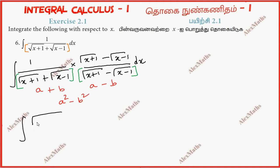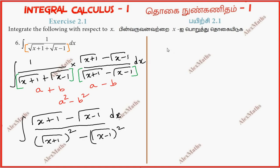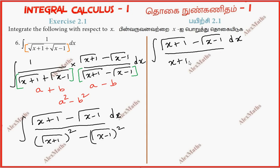Copy the numerator as it is: root of x plus 1 minus root of x minus 1, dx, whole divided by — a square: x plus 1 within the root, this is squared, minus b square: x minus 1 within the root, this is squared. Further, the integral becomes root x plus 1 minus root x minus 1 dx, with denominator simplified.